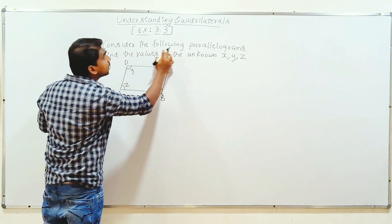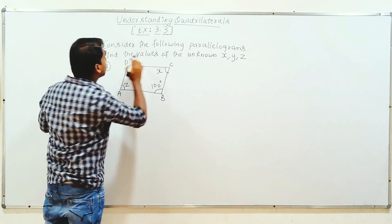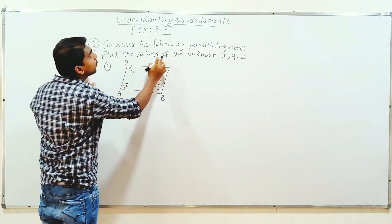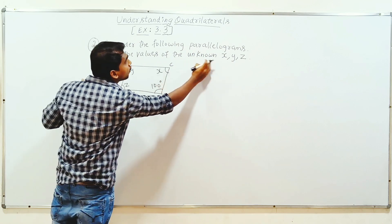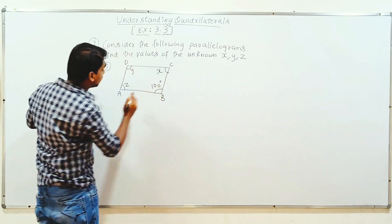Second reading. Consider the following parallelogram. Find the values of the unknowns x, y, z.